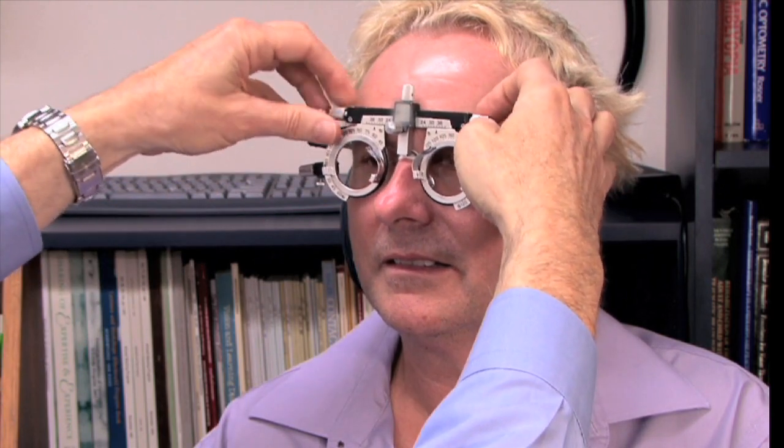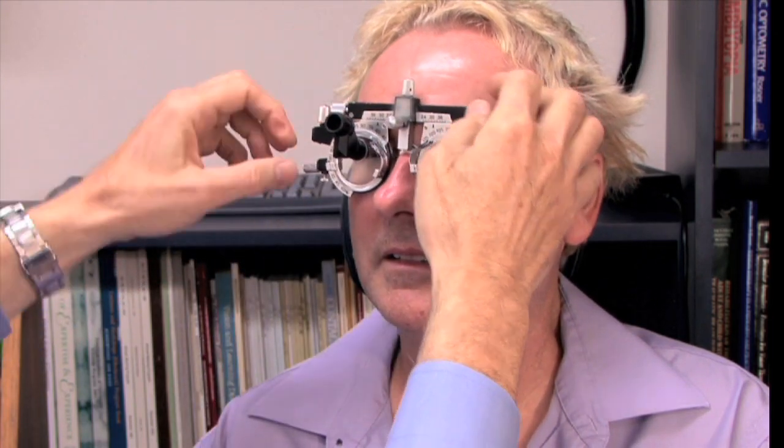First we place the trial frame on the patient, adjust the temples so it's secure, and position the cells on each side so they line up with the center of the eye. Once that's done, we can insert the telescope into the cell, and line it up for the patient so that they can sight through it.